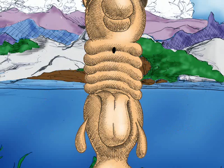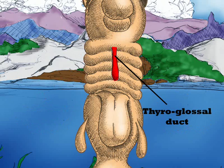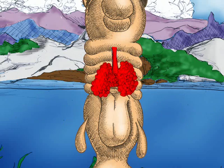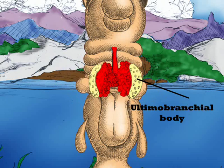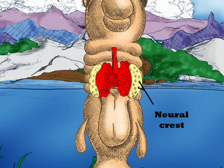From the pharyngeal cecum, a duct called the thyroglossal duct appears. At the end of the duct, the thyroid gland is formed. At last, the fourth pouch gives the ultimobranchial body, wherein there are cells called neural crests, which make the C-cells of the thyroid gland.